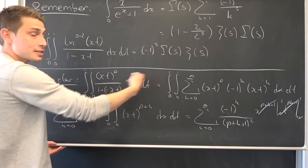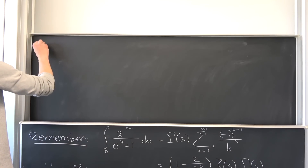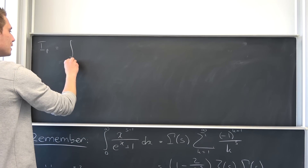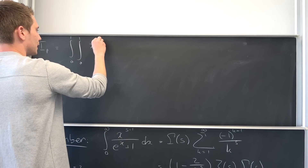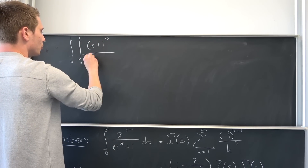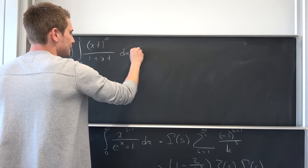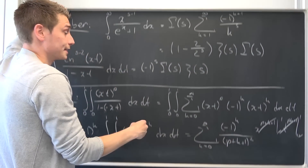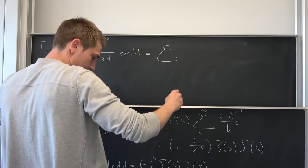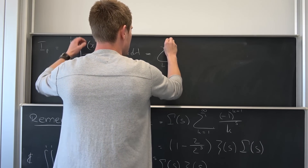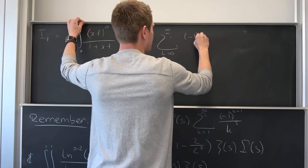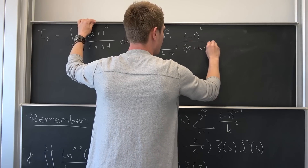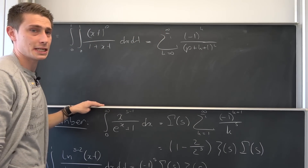So let me conclude this. We are going to give this integral a name: we are going to call it I with little index p, being nothing but the unit square integral of x times t to the p-th power over 1 plus x times t, dx dt. On the other hand, it's nothing but this alternating sum — the sum running from k equals 0 to infinity of negative 1 to the k-th power over p plus k plus 1 squared.